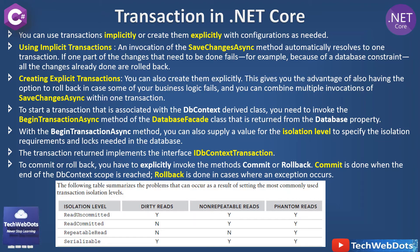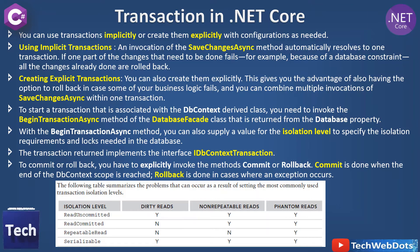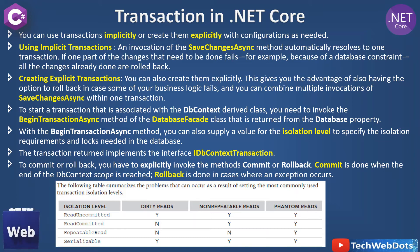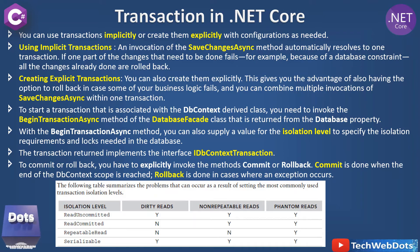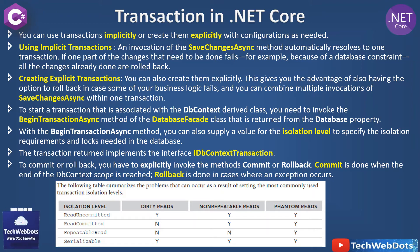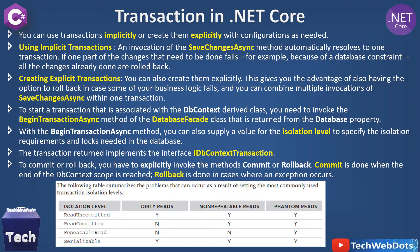This table at the bottom is very important — it summarizes the problems that can occur as a result of setting the most commonly used transaction isolation levels. For Read Committed: dirty reads are not possible (N), non-repeatable reads are possible (Y), and phantom reads are also possible (Y). Now let's switch to Visual Studio to look at all these things in a practical manner.